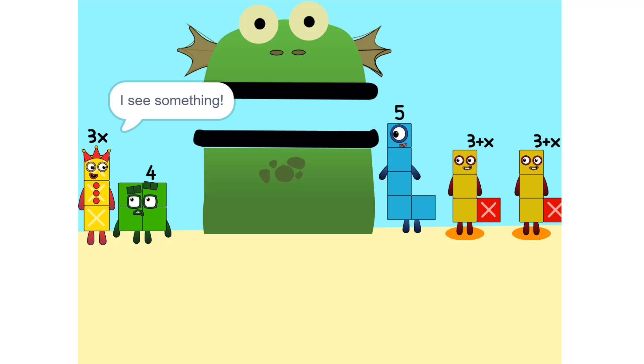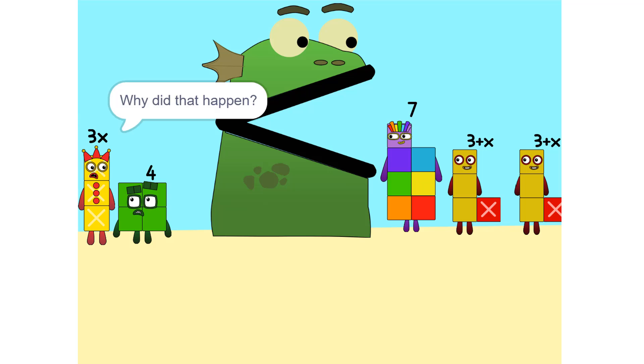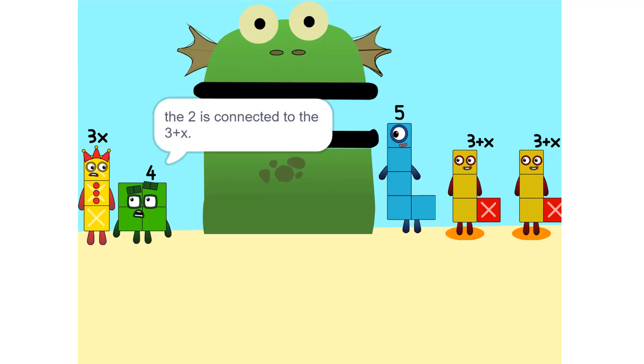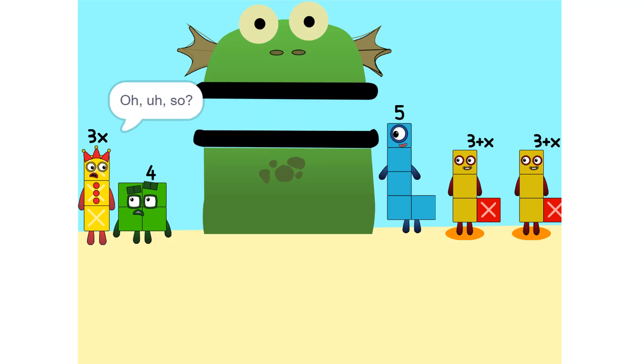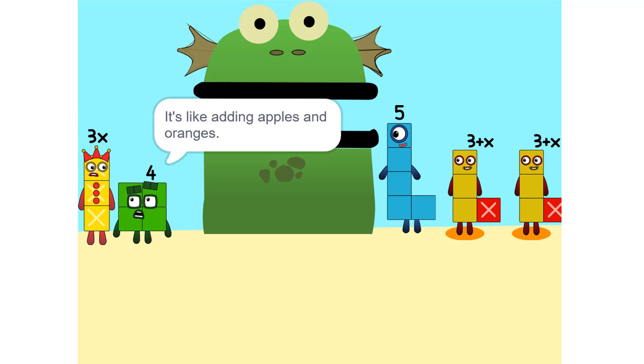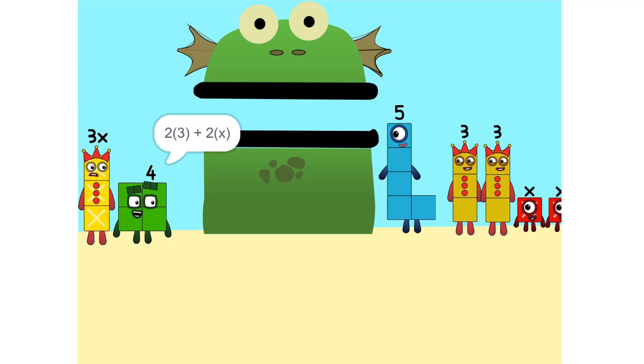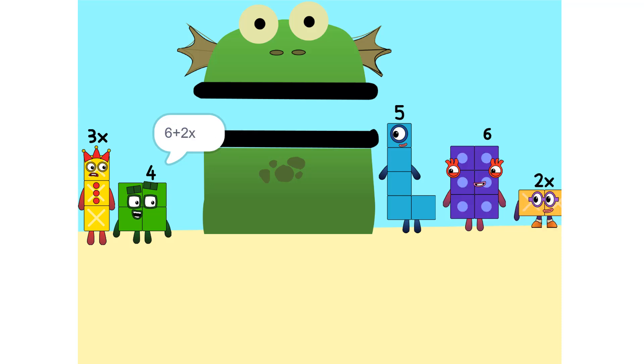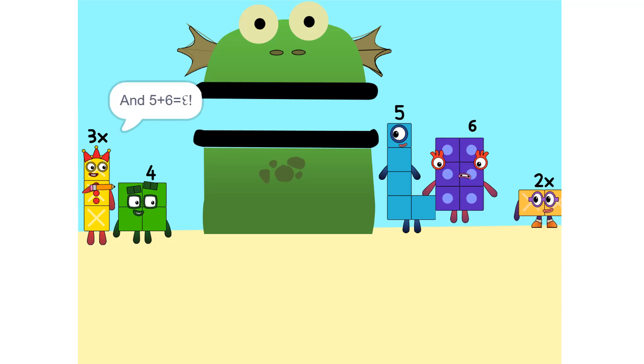I see something. We can add these. Why did that happen? Because the 2 is connected to the 3 plus X. So it's like adding apples and oranges. You can't. So what do we do? See the 2 times 3 plus X? That's the same as 2 times 3 plus 2 times X, which is 6 plus 2X. And 5 plus 6 is 11.